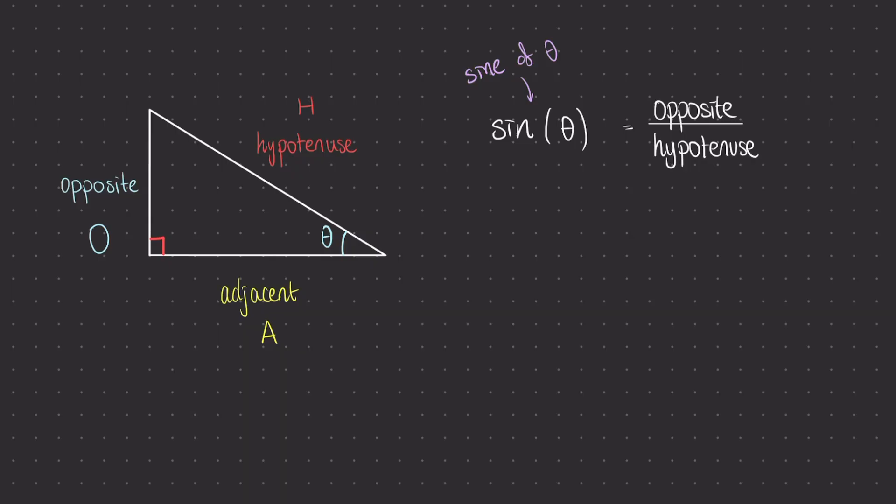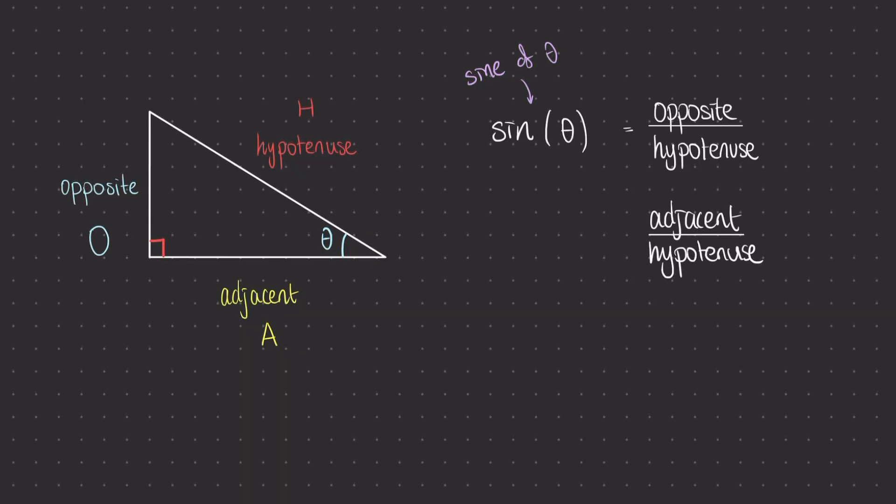Whenever we're using one of these trigonometric ratios, I like to place brackets around the input, which is going to be always an angle. So on the left-hand side of this formula we're always going to be doing sine of an angle. The next ratio is between the adjacent side and the hypotenuse, and this is cosine of the angle. We normally shorten cosine to just cos.